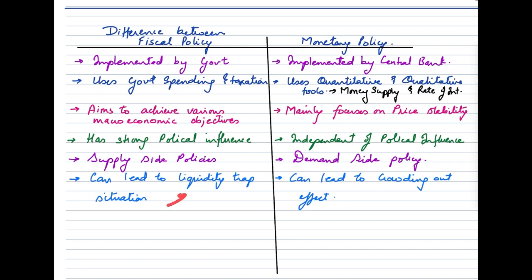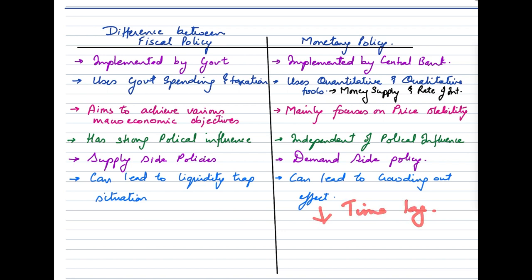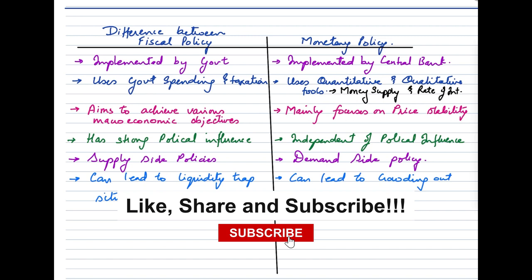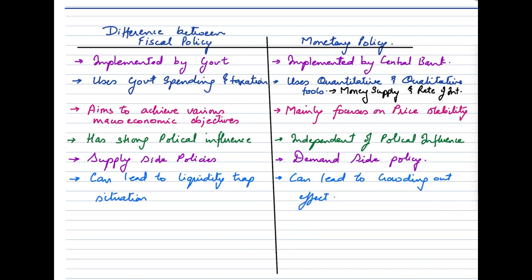An expansionary fiscal policy could lead to a liquidity trap, whereas an expansionary monetary policy could lead to a crowding-out effect. Additionally, fiscal policy generally has a longer time lag than monetary policy when it comes to implementation and results. If you find these videos useful, please like, subscribe, and share with your friends. See you in the next video — bye and take care.